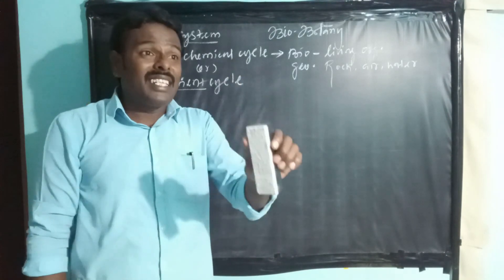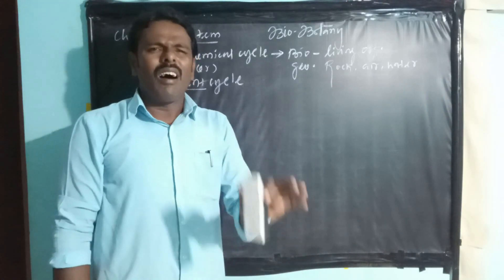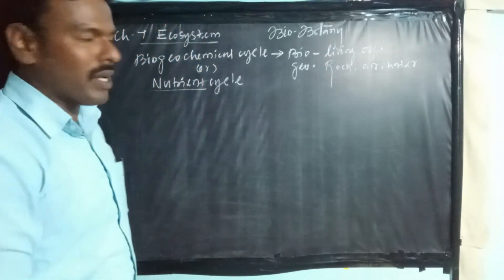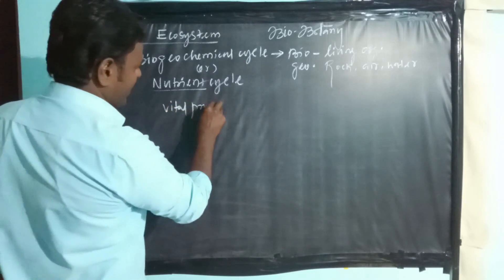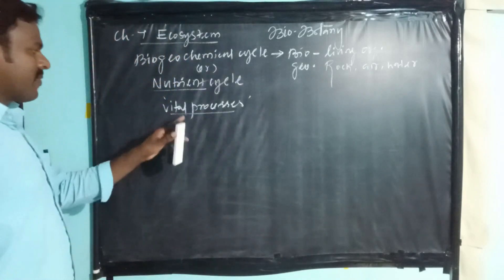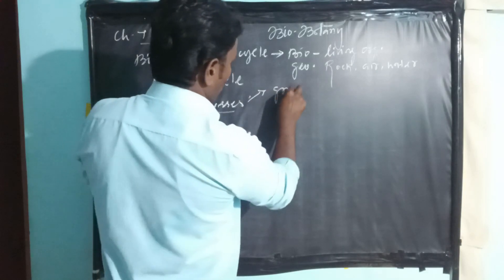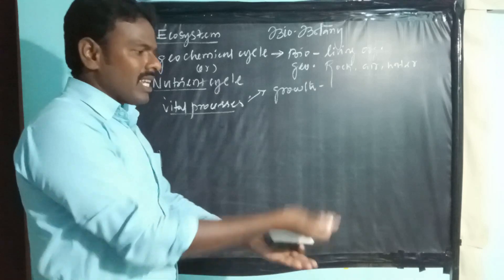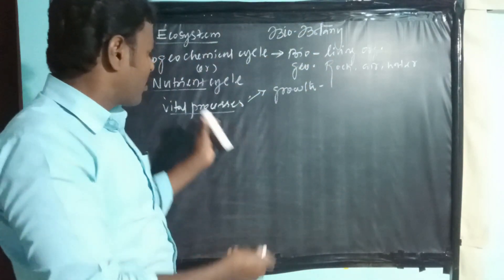Why is this an essential aspect of ecosystems? Because all organisms require nutrition for vital processes. For example, growth — for both plants and animals, their increase in size day by day or year by year requires nutrients.